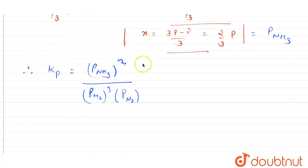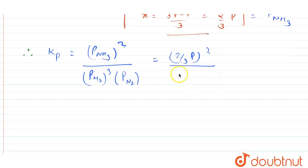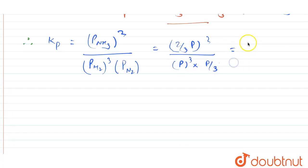So this will be equal to 2 by 3 P the whole square divided by pressure of hydrogen P the whole cube and pressure of nitrogen P by 3. So this will be equal to 4 upon 3P square.